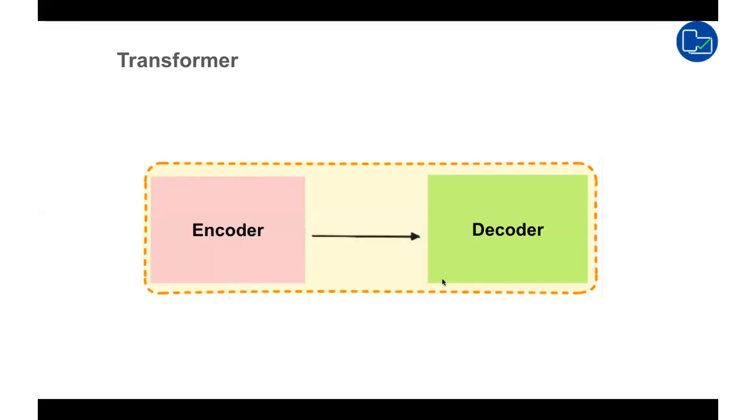So Transformer consists of two major components, encoder and decoder. Encoder reads the whole input and figures out which parts are important using the attention mechanism, while decoder generates the output.